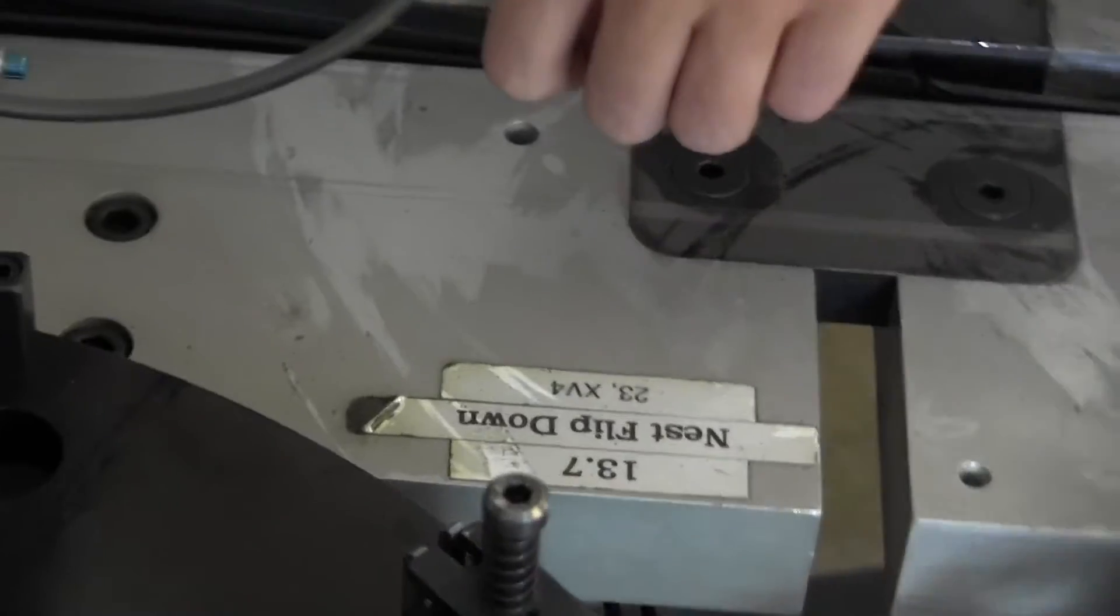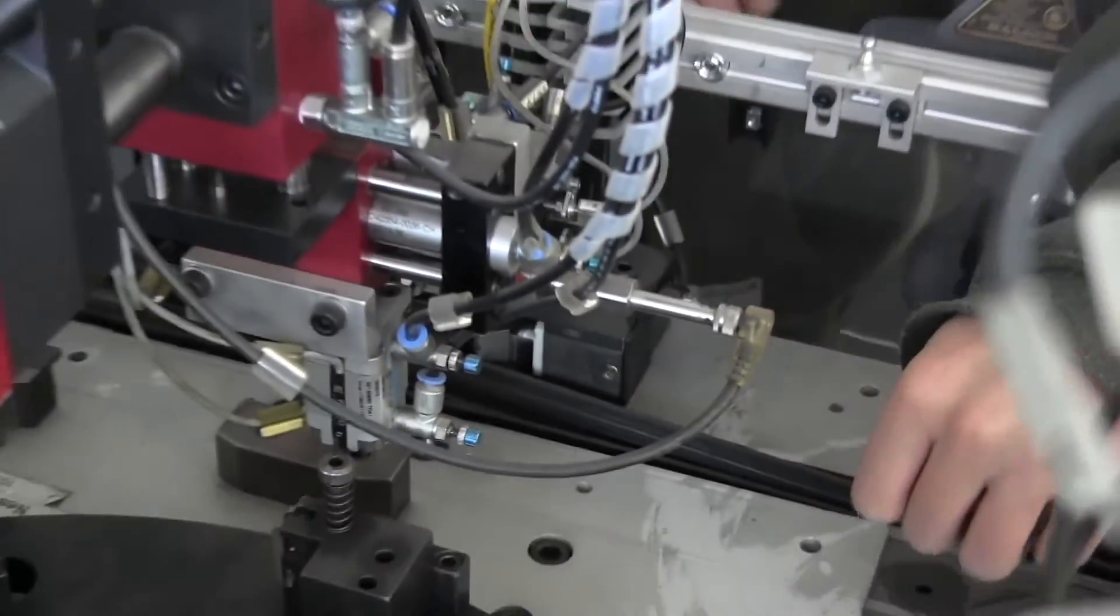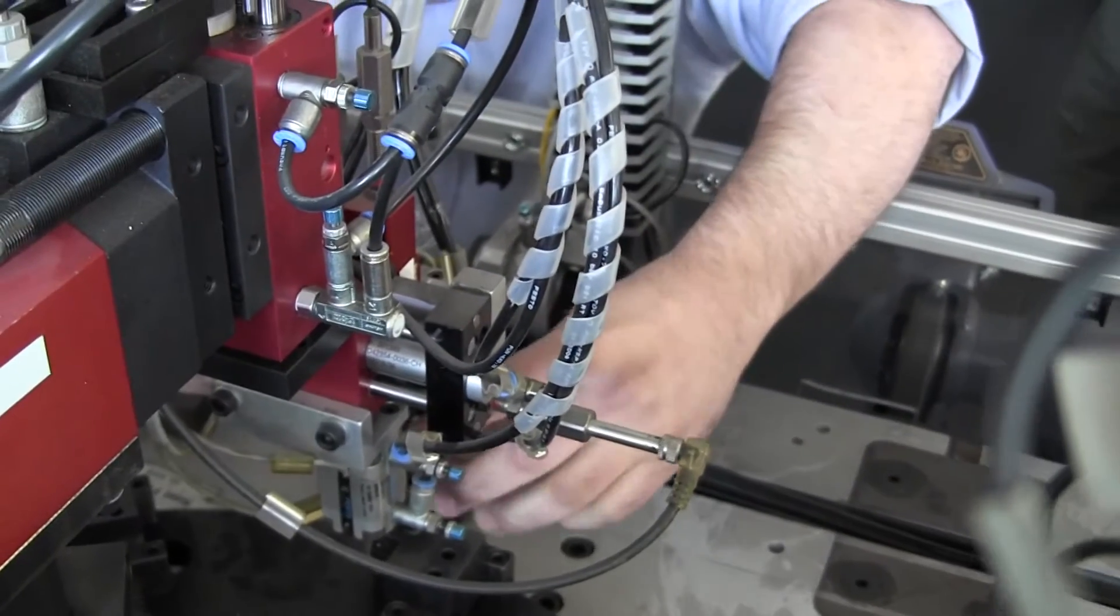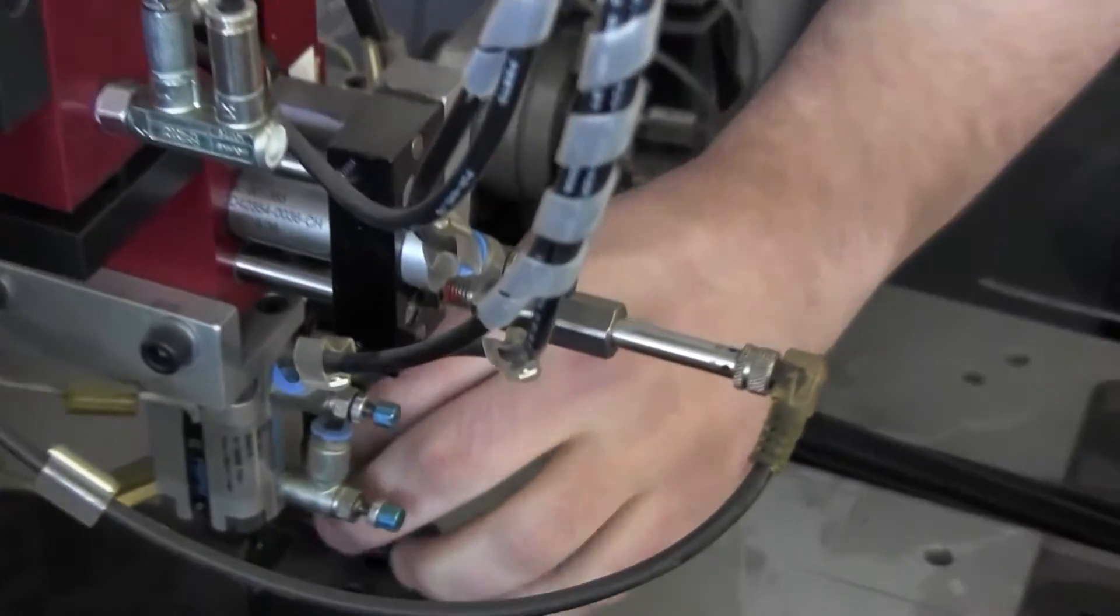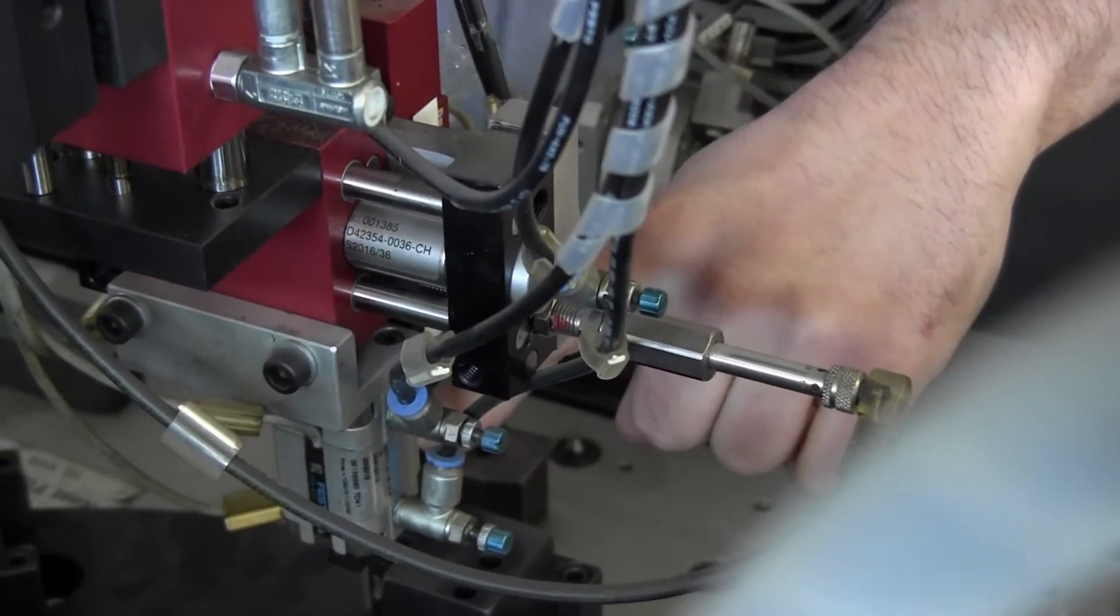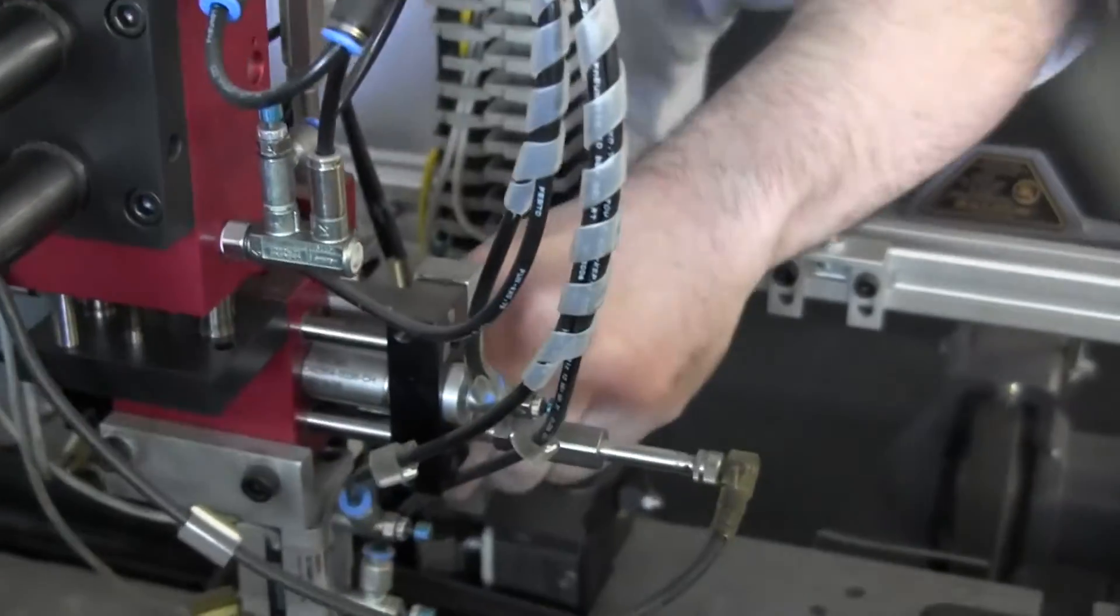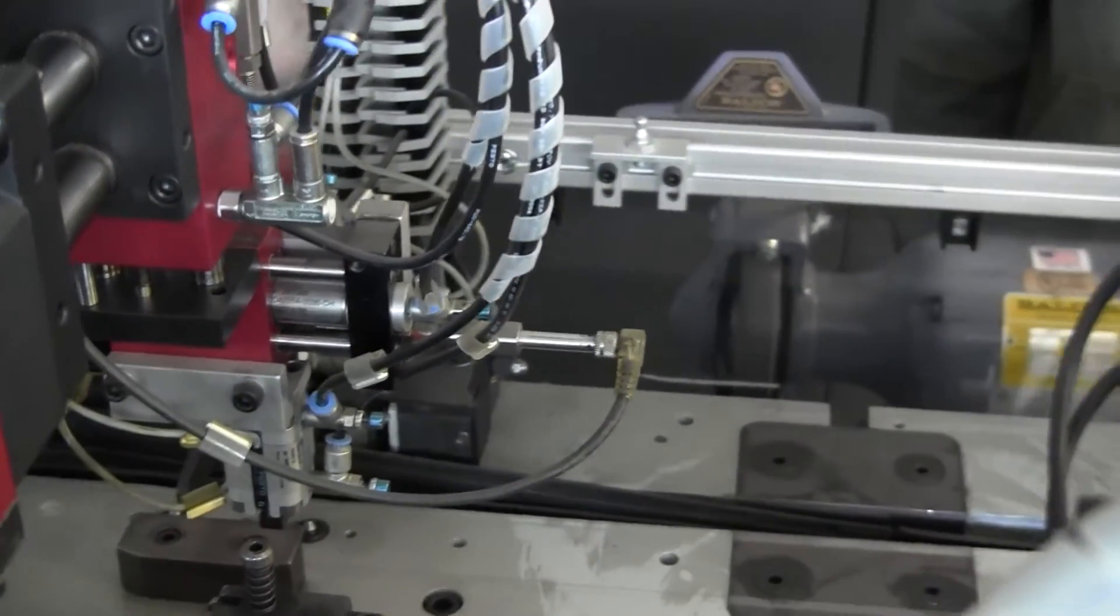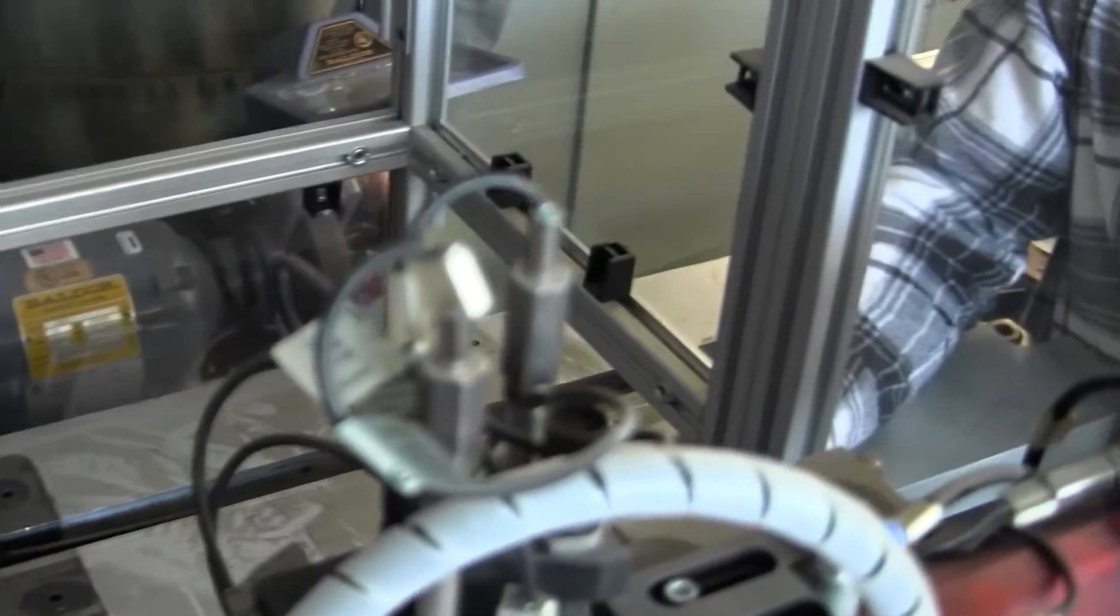And then this thing here would come down, press on this little lever here. Well actually first it would come down, grip the part, press on the lever and kind of do a handoff. Pick it up under spring tension, come over on the sub-assembly and then strip it out.